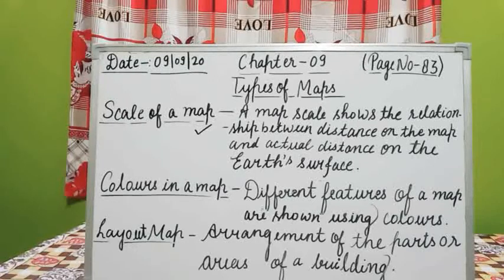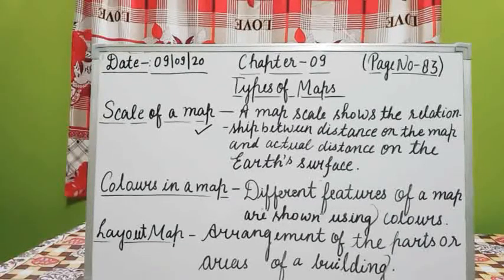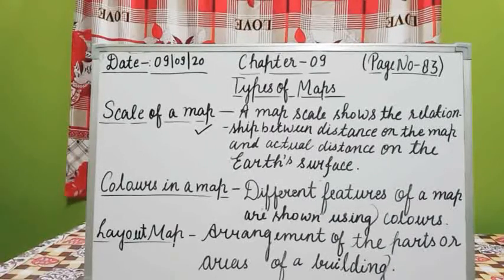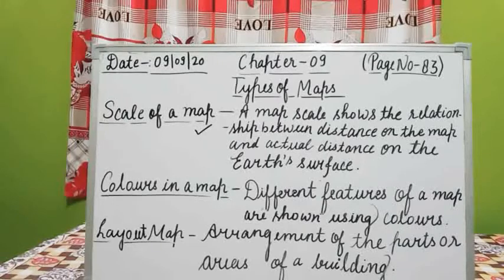The next type of scale is known as graphic or bar scale. See on page number 84, a picture is given at the top where 2 cm is equal to 1 km. This means that whatever 2 cm shows on the map, in reality on the earth it will be 1 km.